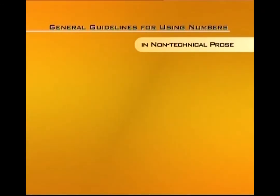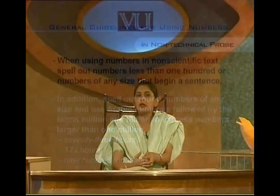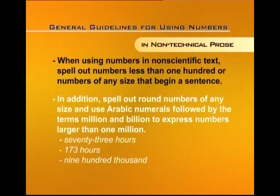For general guidelines for using numbers in non-technical prose: spell out numbers less than 100 or numbers of any size that begin a sentence. Spell out round numbers of any size. Use Arabic numerals followed by the terms 'million' and 'billion' to express numbers larger than one million. For example, spell out numbers when talking about smaller figures, but write large figures in numerals.